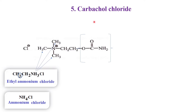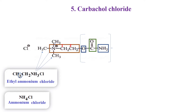That would be the structure of carbachol chloride. This is the first carbon and the second carbon, and with the second carbon we have aminocarbonyloxy — that is why it is 2-aminocarbonyloxy. The three methyl groups are attached with the nitrogen, making it N,N,N-trimethyl ethyl ammonium chloride. That is the chemical name of carbachol chloride. It is a parasympathomimetic agent.